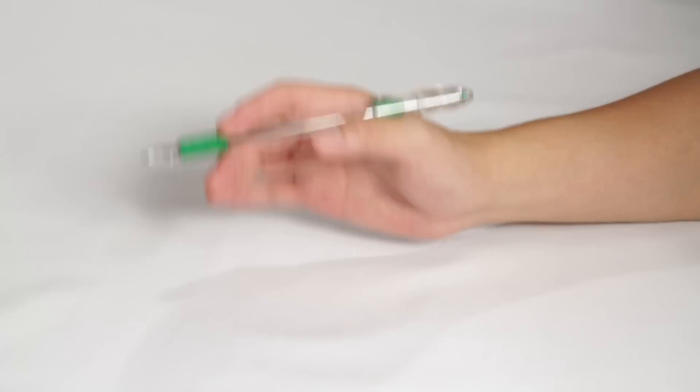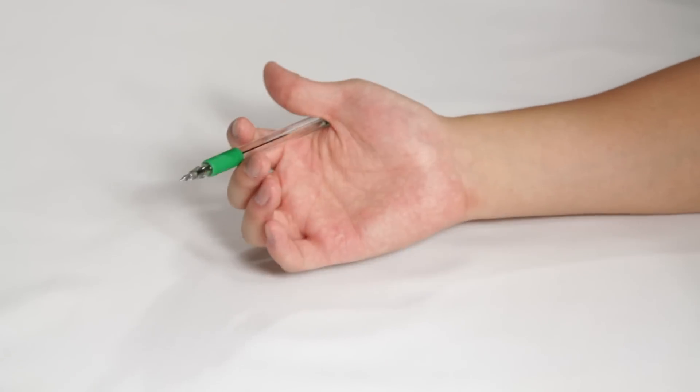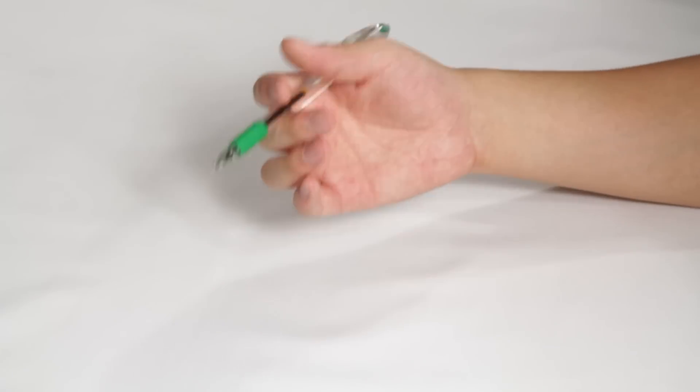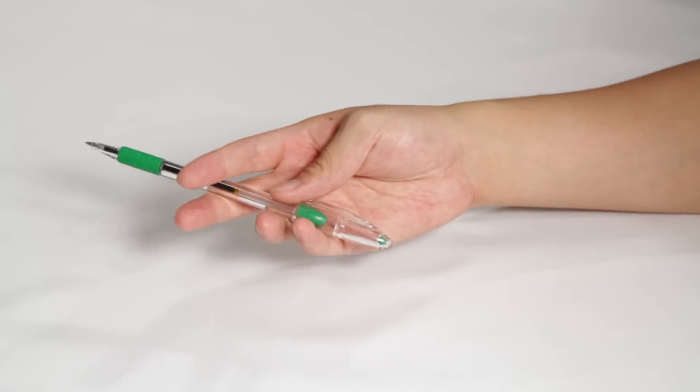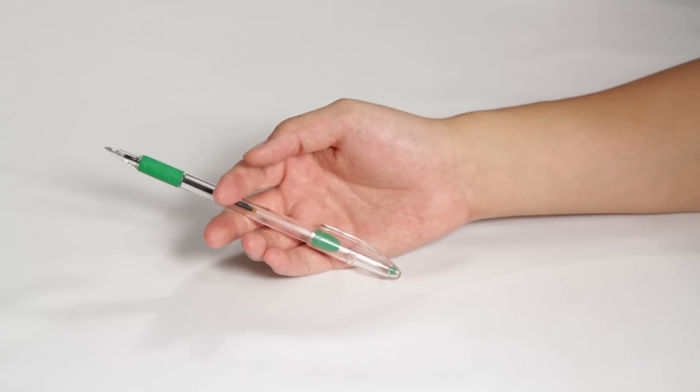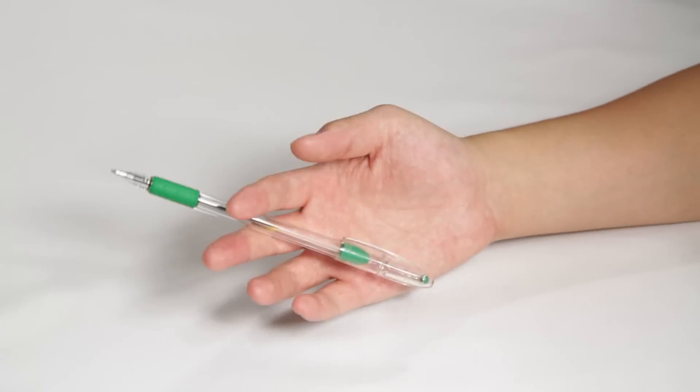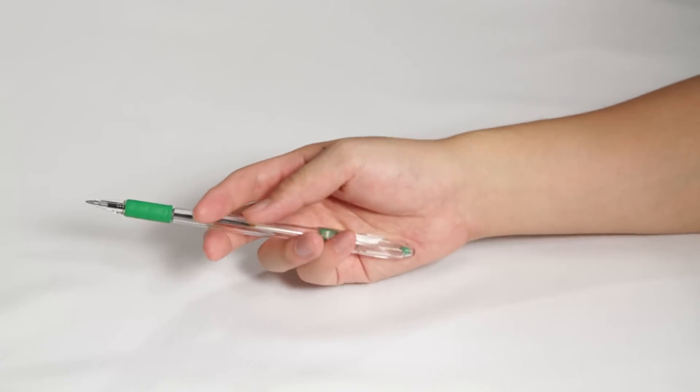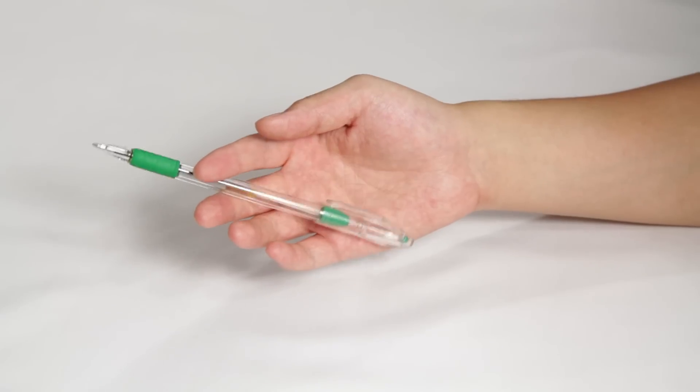And just like the previous two tutorials that we've done, the Twisted Sonic and the Twisted Sonic Reverse, this trick is a hybrid and it is a combination of some of the fundamentals we've already learned. I like to call it a fundamental hybrid, but I don't know if that's a real term. But without further ado, this is what the trick looks like.